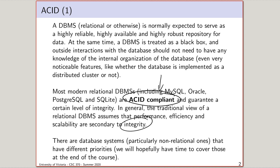In the context of the systems we've been discussing in this course, integrity is the top priority, and we're going to proceed under that assumption. Even if you end up working in a setting where integrity isn't the top priority — where losing a bit of data here and there isn't a big deal — without understanding how to ensure integrity, it's very hard to actually know how to sacrifice it properly.